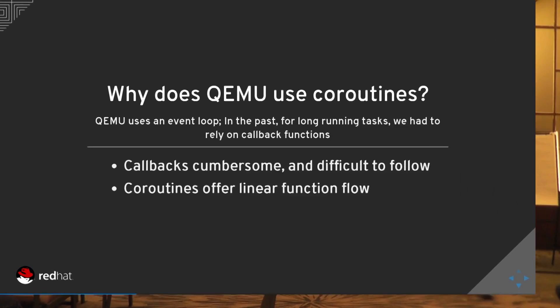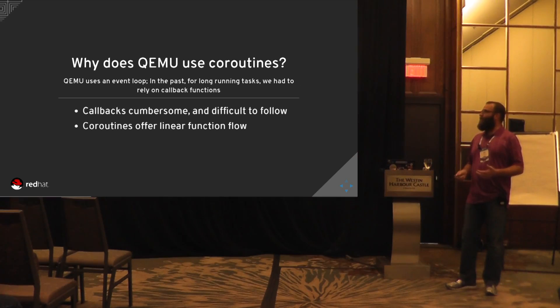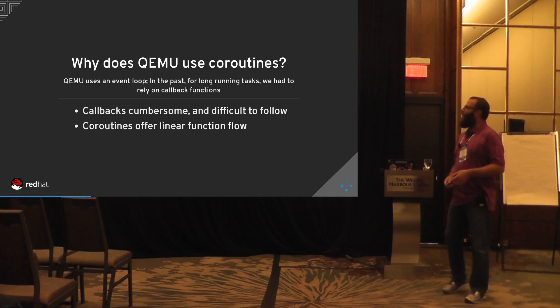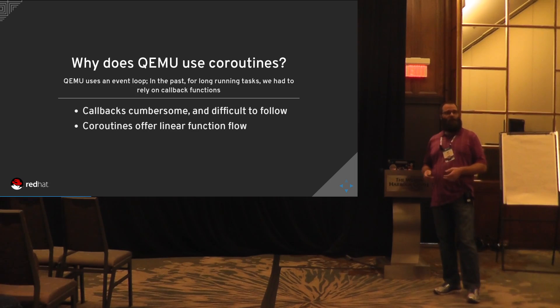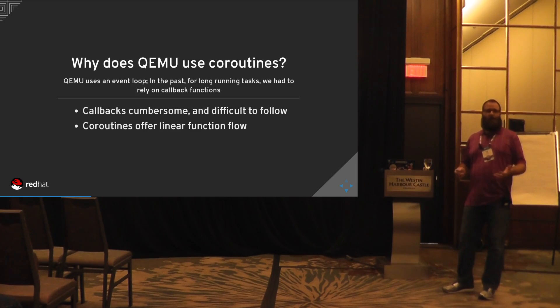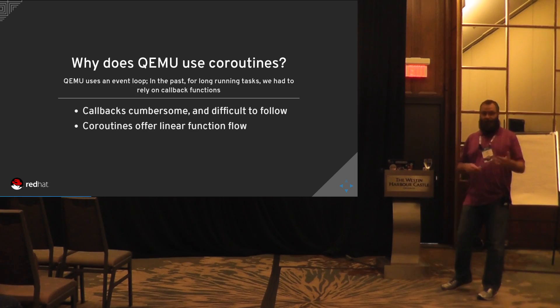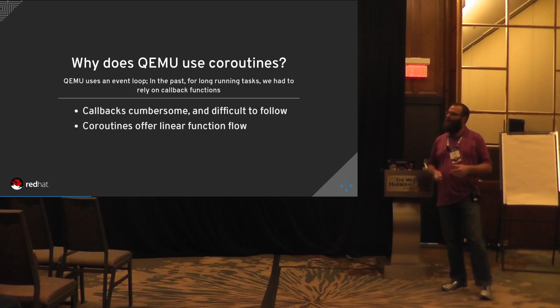Looking at the history of QEMU and why it uses coroutines: QEMU has an event loop where we respond to events. In the past, for tasks we would use coroutines for now, we had to have callback functions. With a bunch of callbacks it's cumbersome, difficult to debug, and hard to follow what's going on when everything is completely asynchronous. Coroutines offer a more linear function flow — you have a function you enter just like any other, so you can logically follow the flow of execution.